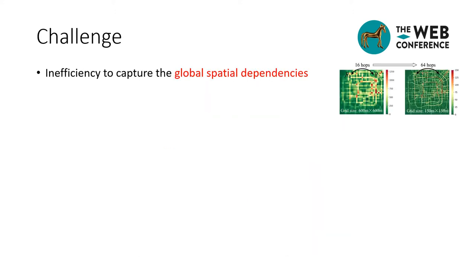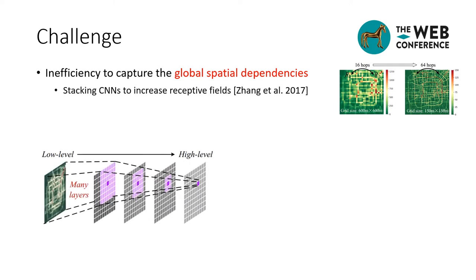When increasing the granularity, the distance between two specific grid cells will also increase. Thus, it becomes far more important to capture regional dependencies on a global scale in such fine-grained settings. However, existing methods are inefficient to capture such global spatial dependencies. Most previous studies like ST-ResNet employ convolutional neural networks to capture information locally, but to capture global spatial dependencies, they have to stack many layers to increase the receptive field of the network. This is very inefficient since the relationship between distant regions can only be captured by a near-top layer with a sufficiently large receptive field.